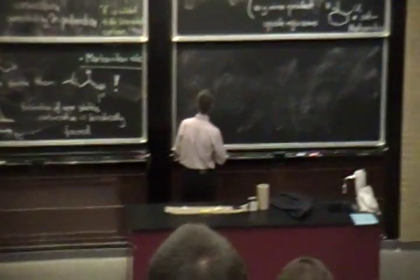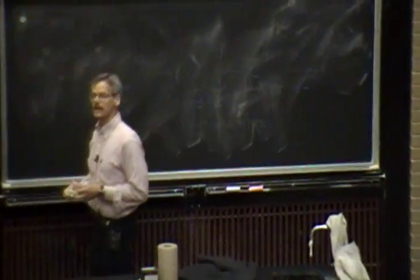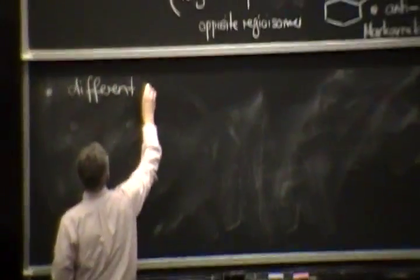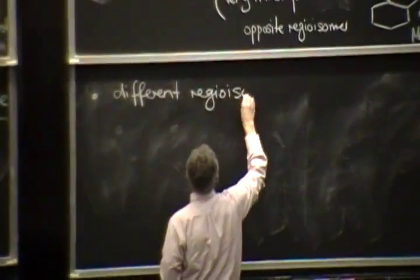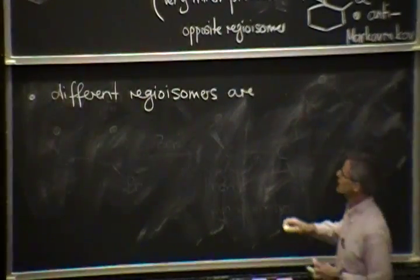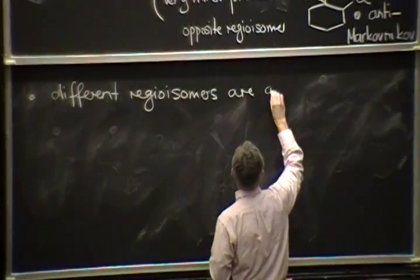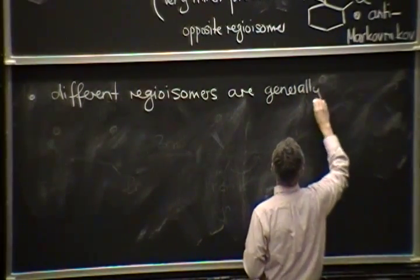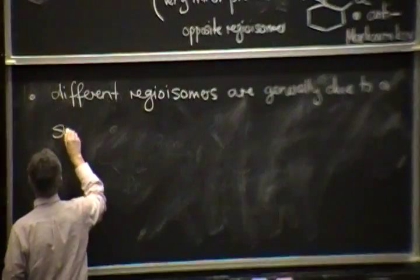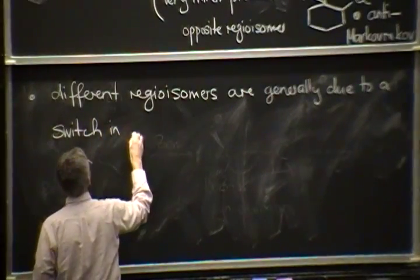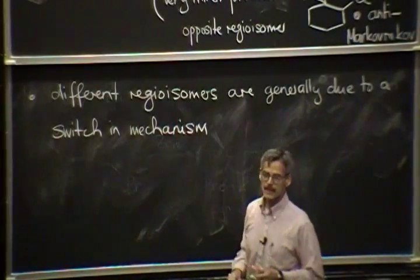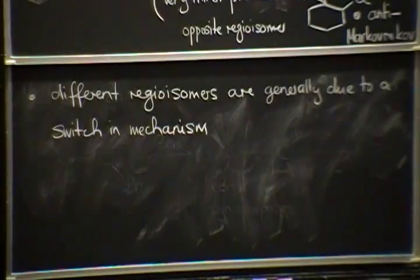So, we have time to do the radical order. So, if you see different regioisomers, they are generally due to a difference in the mechanism, to a switch in the mechanism. In this case, we can go from an ionic mechanism to a radical mechanism.